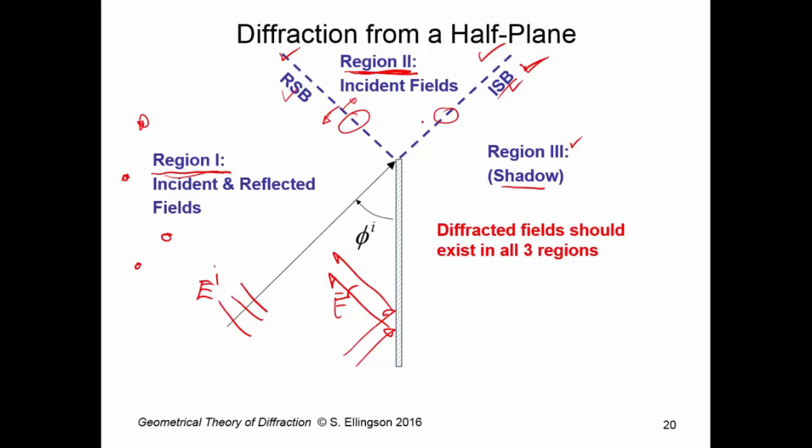Ironically, GTD does not do that. UTD does. But GTD does something that's still kind of useful in that it will compute reasonable values of diffraction away from the shadow boundaries. In any event, in region 3, we have only diffraction. So region 1, incident, reflected, diffracted. Region 2, incident and diffracted. Region 3, only diffracted.